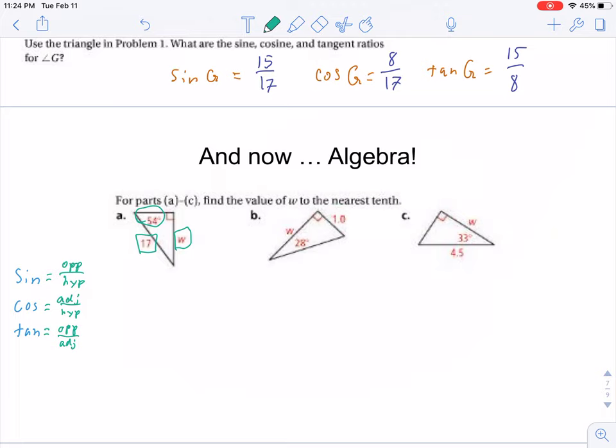In this case, the variable is on the opposite side, while the constant is the hypotenuse. Therefore, we can use sine, and we can say that sine of 54 degrees is equal to w over 17.